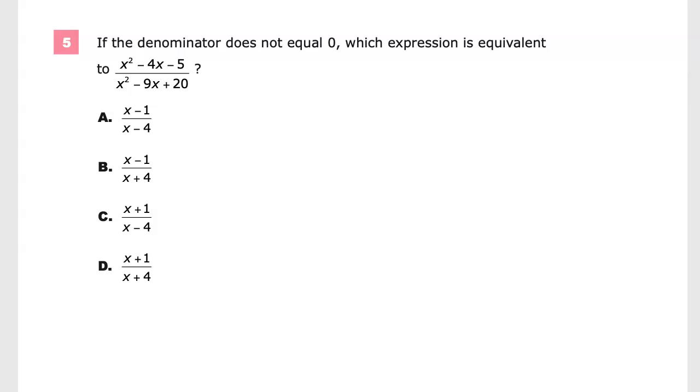If the denominator does not equal 0, which expression is equivalent to the quantity x squared minus 4x minus 5 over the quantity x squared minus 9x plus 20?